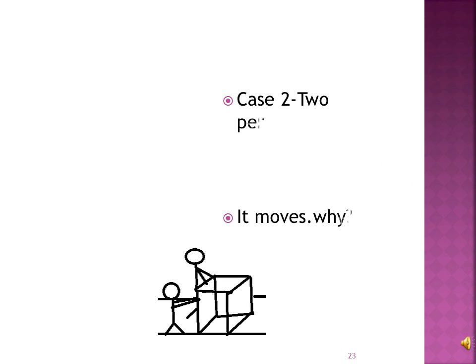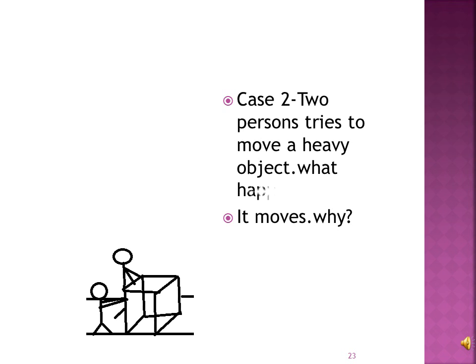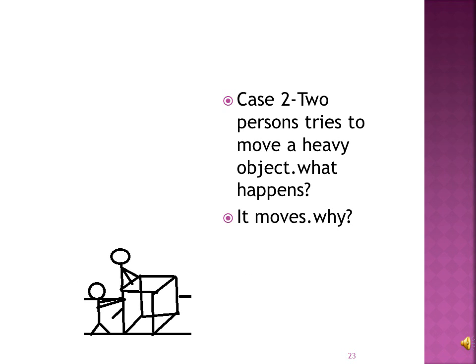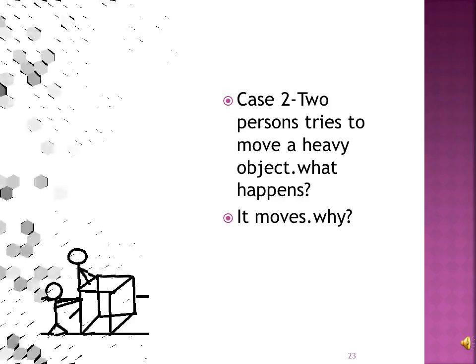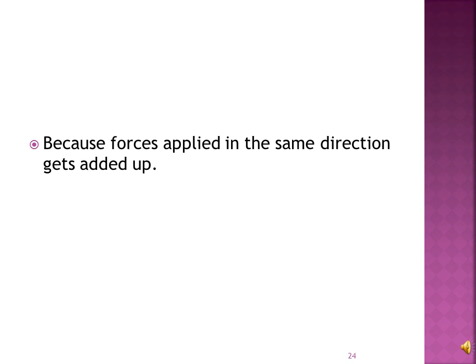The first person could not move the heavy box. So another person joins and tries to move the object, and both of them succeed — it moves. Why? Because forces applied in the same direction get added up, so the combined force becomes sufficient to overcome the weight of the box.